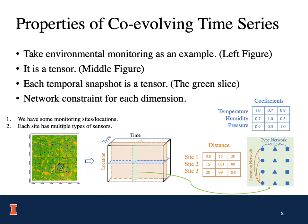There are several properties of co-evolving time series. Let's take the environmental monitoring as an example, which is shown in the left figure. Suppose we have some monitoring sites or locations, and each site has multiple types of sensors. The time series collected by these sensors can be formulated as a tensor, shown in the middle figure. The first dimension is the location, the second is type, and the third is time. Moreover, each temporal snapshot is also a tensor, as shown in the green slice. The values in the green slice are connected by networks — for example, the coefficient networks between temperature, humidity, and pressure, and the distance network between different sites.